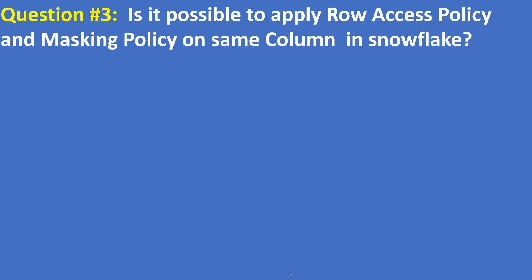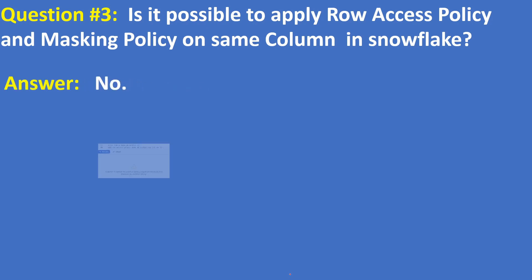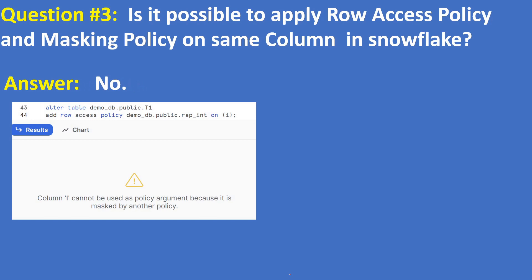Question three: is it possible to apply both a row access policy and a masking policy on the same column in Snowflake? The answer is no. If you assume you already applied a masking policy on table T column I, and then try to apply a row access policy, you get an error: column I cannot be used as a policy argument because it is masked by another policy.